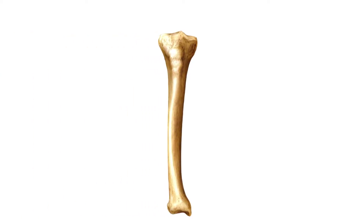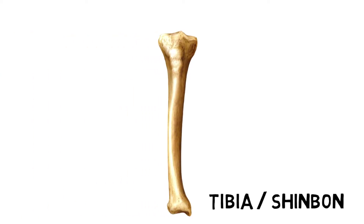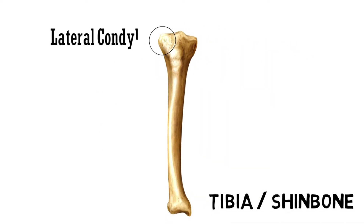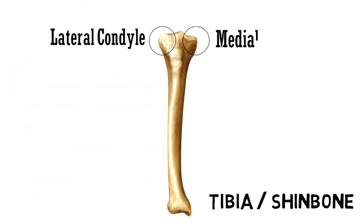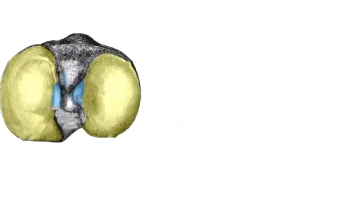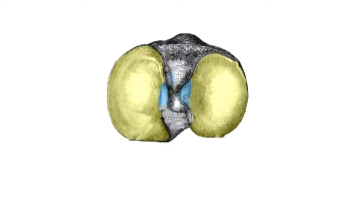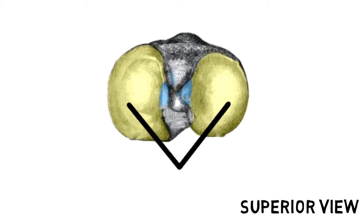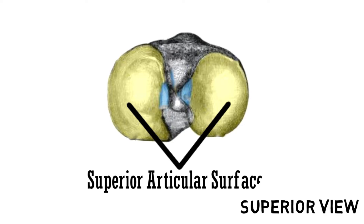Let's have a look at these parts. This is the figure of the shin bone. This expanded area is the lateral condyle, whereas this part is the medial condyle. This is the superior view of the bone, and the areas shaded in green are the superior articular surfaces, which articulate with the respective condyles of the femur bone.